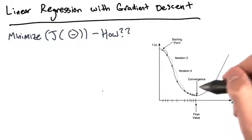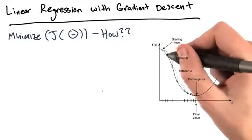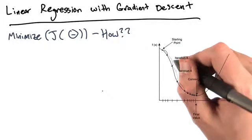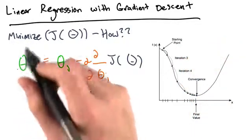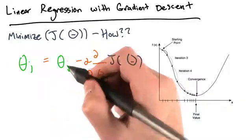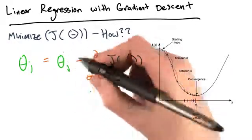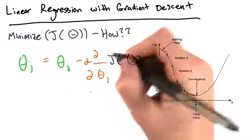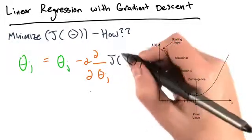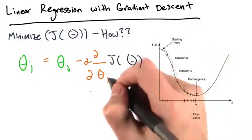This algorithm is called gradient descent. So it starts with some initial theta and we're going to update our values of theta according to this equation. For each theta j, our new theta j is going to be equal to that same theta j minus some constant alpha times the derivative of J of big theta with respect to that theta j.